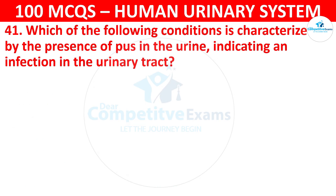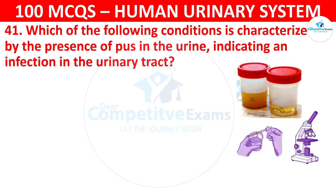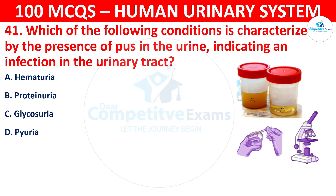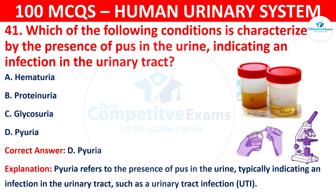Question 41: Which of the following conditions is characterized by the presence of pus in the urine, indicating an infection in the urinary tract? The options are: hematuria, proteinuria, glycosuria, or pyuria. The correct answer is D, that is pyuria. Pyuria refers to the presence of pus in the urine, typically indicating an infection in the urinary tract such as urinary tract infections.